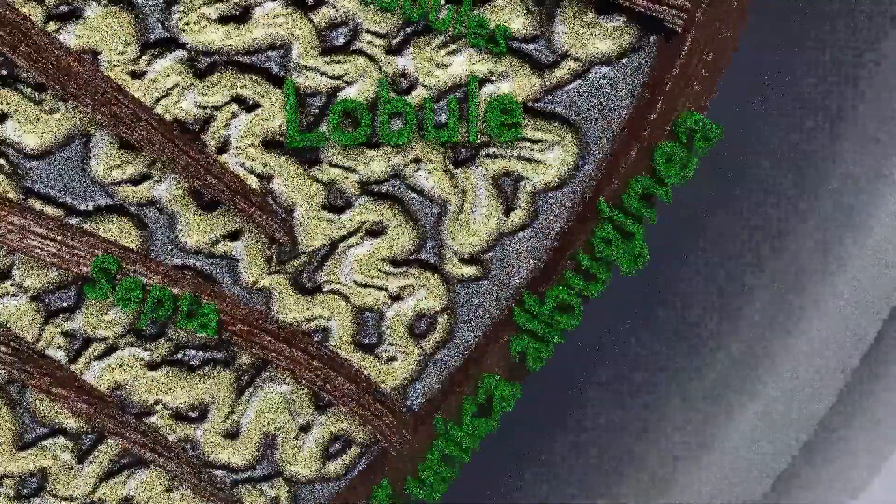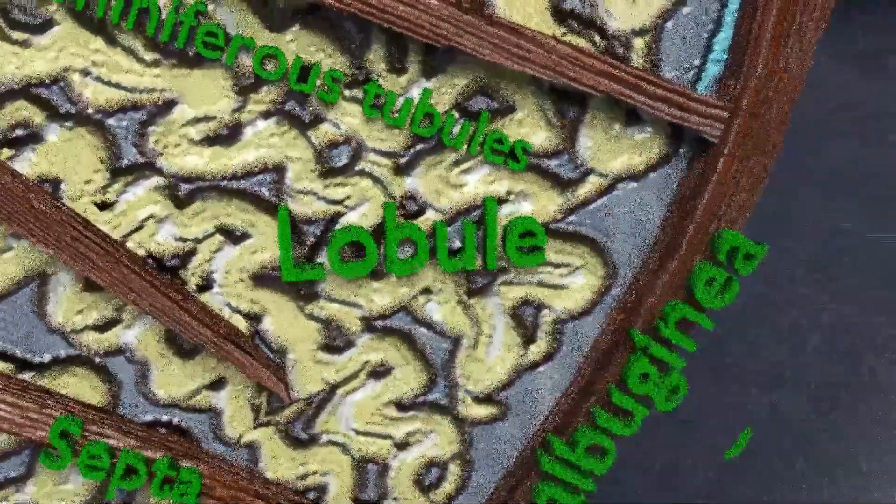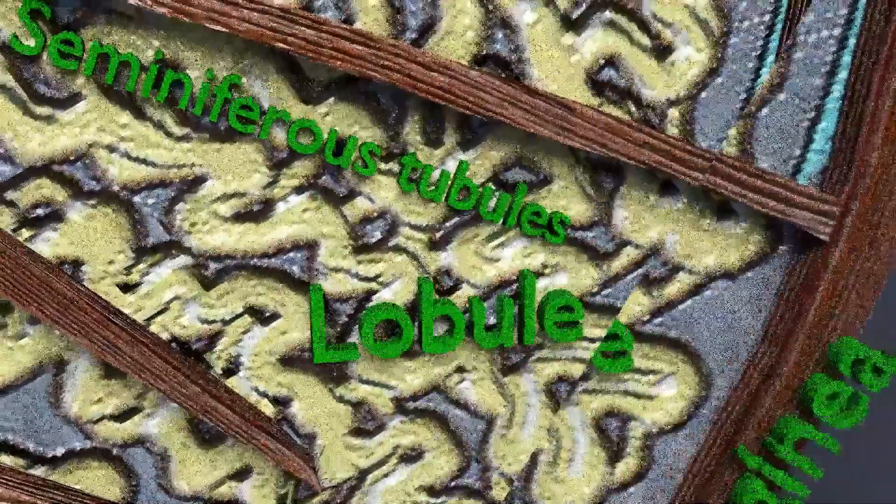Now you are able to see the testicular lobules. The glandular part of the testes consists of 200 to 300 lobules. Each testicular lobule contains 2 to 3 seminiferous tubules.